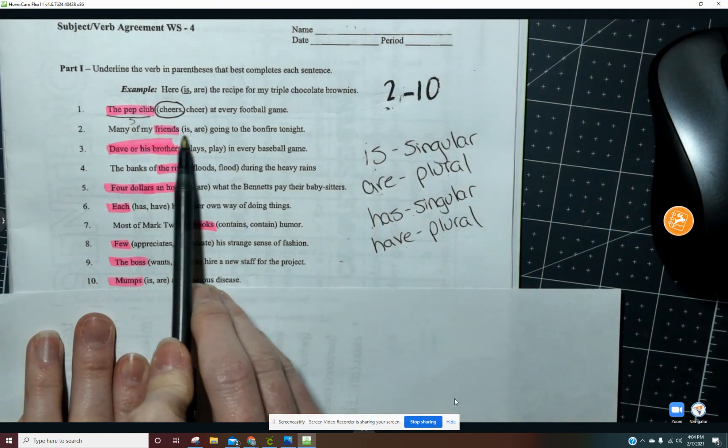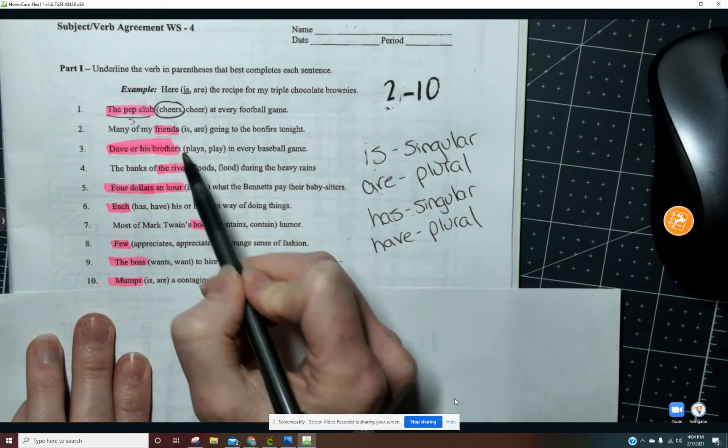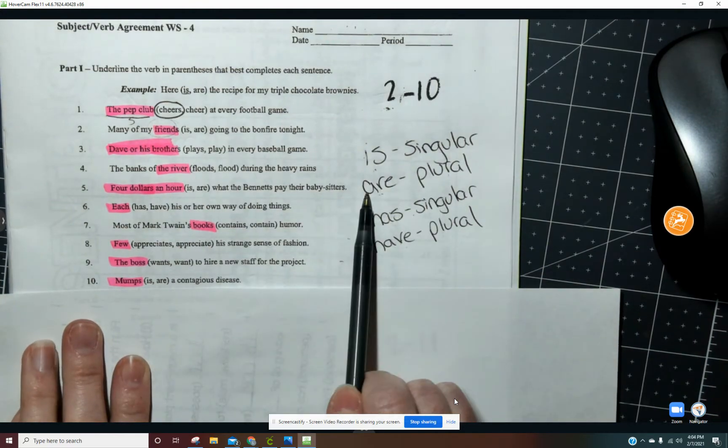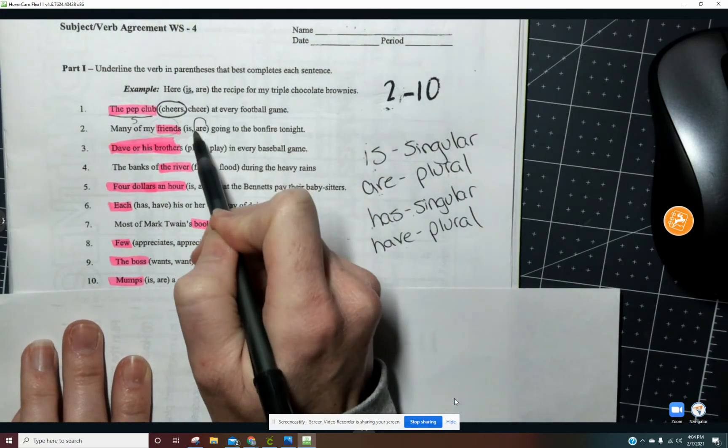Many of my friends, so friends has the S and so it's plural. So we need the word are. Many of my friends are going to the bonfire tonight.